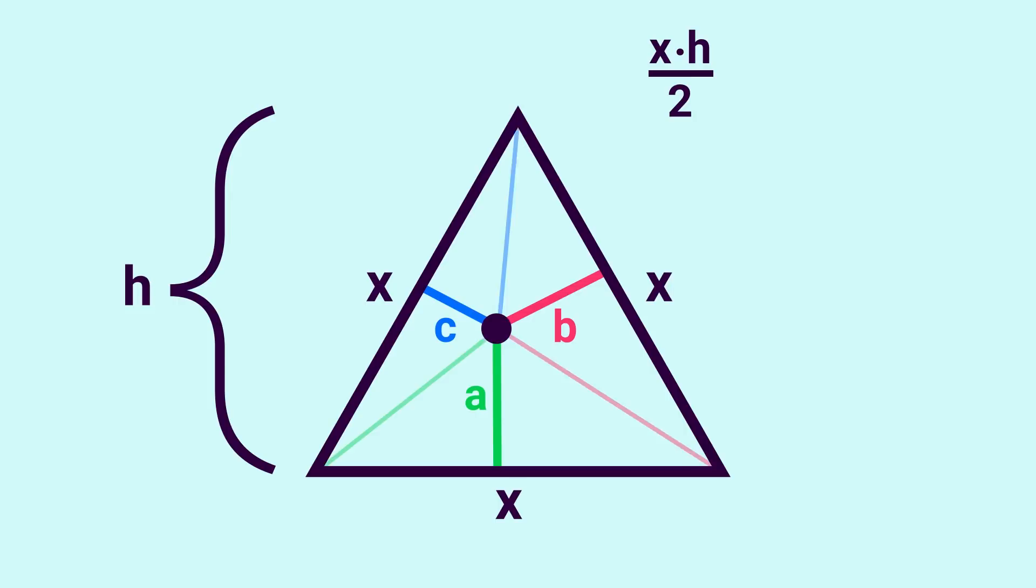Then you'll notice I can break the bigger triangle up into three smaller triangles using A, B, and C as the respective heights. The area of this bottom one is base, X, times height, A, all over 2. The next triangle would be X times B all over 2, and the last one would be X times C all over 2.